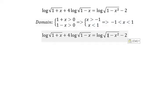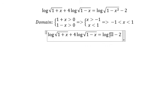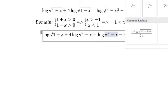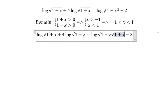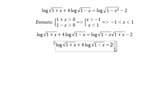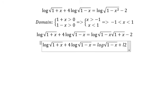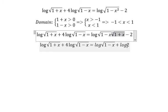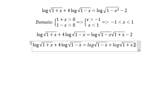Next, about this one, we can separate them into the square root 1 minus x multiplied with the square root 1 plus x. Next, log a multiplied with b, so we can separate them into log of the square root 1 minus x plus log the square root 1 plus x minus 2.